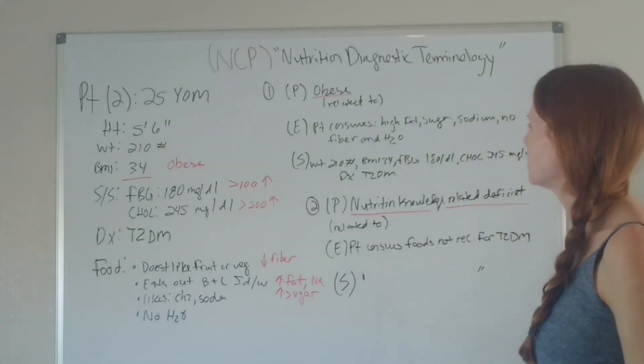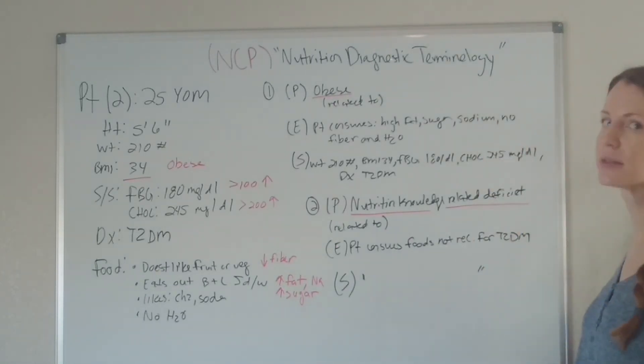I went ahead and put two PES statements right here. One obviously is obese. So this patient is obese, that's a problem, and that's related to the patient consumes high fat, sugar, sodium, no fiber, and water. Now your signs and symptoms you can put their weight, their BMI, the fasting blood glucose, cholesterol, and the diagnosis of type two diabetes. And then I have another PES statement under your knowledge portion of the diagnostic terminology: nutrition knowledge related deficit, related to the patient consumes foods not recommended for type two diabetes. Obviously this person is not eating right for their diagnosis and they probably need some nutrition counseling pronto. And then your signs and symptoms would be the same as previous.